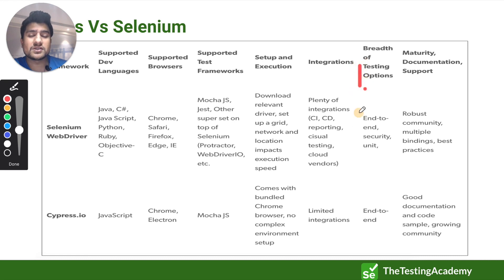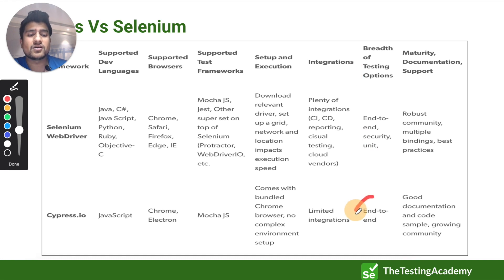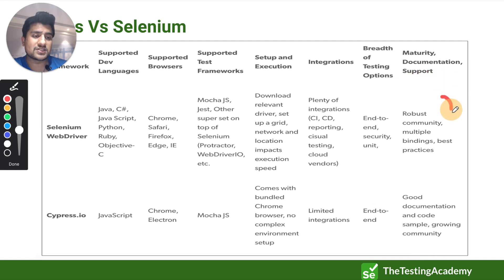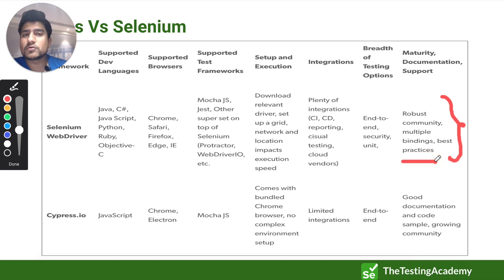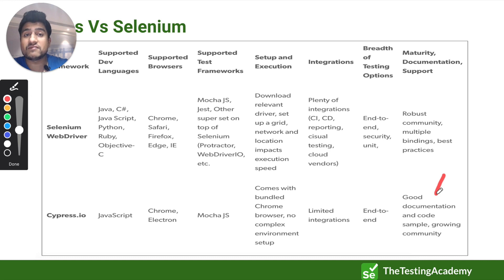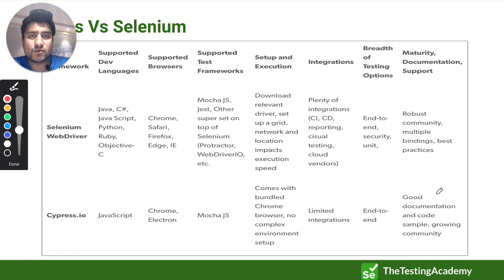In terms of breadth of testing, Selenium supports end-to-end testing, security testing, and unit testing. Cypress currently only supports end-to-end testing. For documentation and community, Selenium has a robust community, best practices, and lots of books available — it's a well-established player. Cypress has good documentation and a growing community, especially for front-end testing.